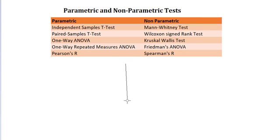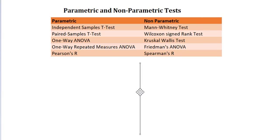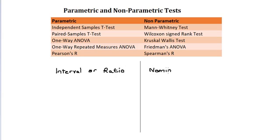Let's take a look at some common assumptions for these tests. In order to use a parametric test, your data has to be on the interval or ratio scale. If you have data that's nominal or ordinal, you need to use the non-parametric version of the test.